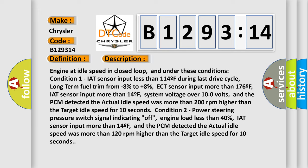Engine at idle speed in closed loop, and under these conditions: Condition 1 - IAT sensor input less than 114F during last drive cycle, long term fuel trim from -8% to +8%, ECT sensor input more than 176F, IAT sensor input more than 176F and more than 14F.